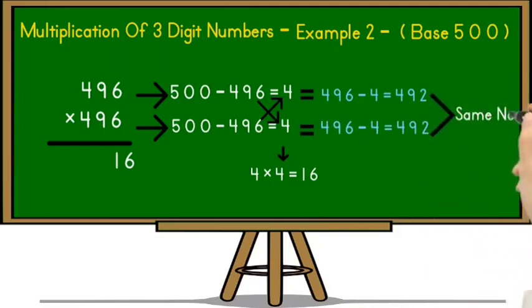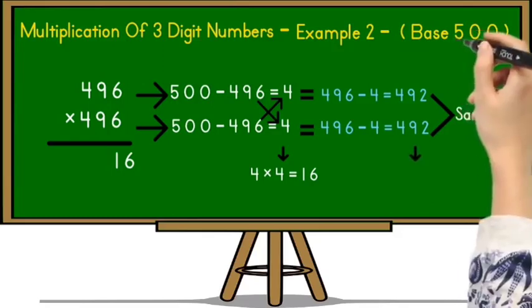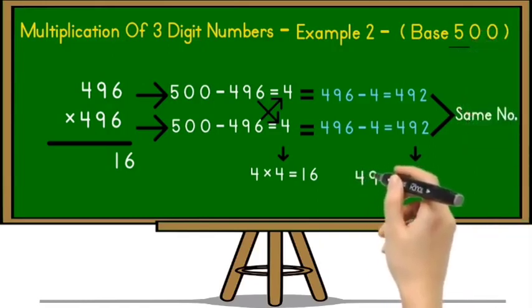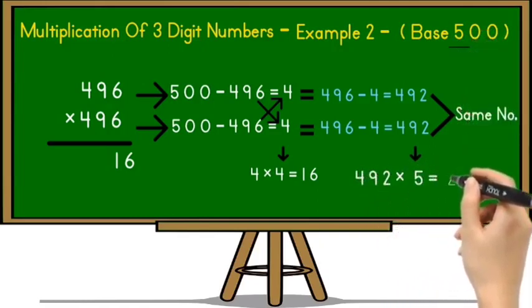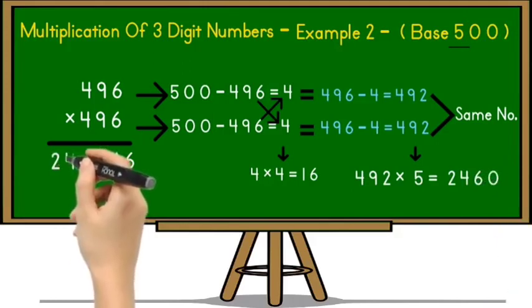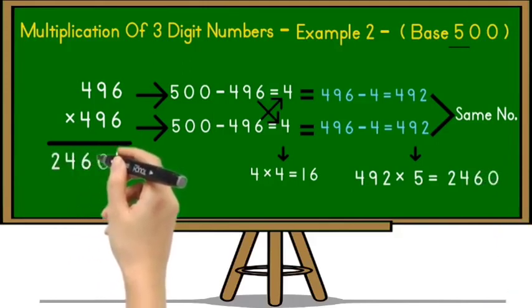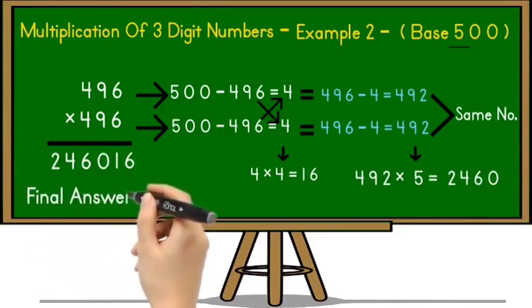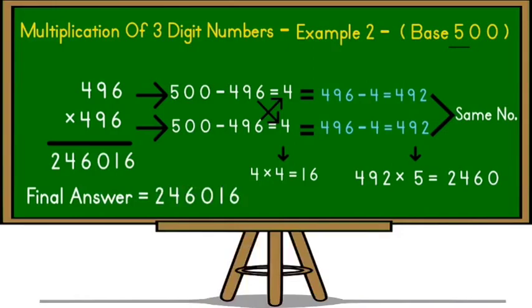So here we got same number again. So we have to take 492 in the next step and multiply this 492 with the 100 plus digit of base number. So base number is 500 and 100 plus digit of 500 is 5. So 492 multiplied by 5 is equal to 2460. So write down this number in a product and before 16. So the final answer is 246,016.